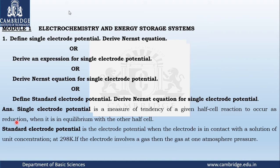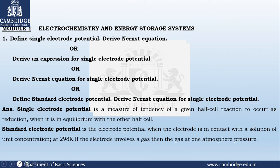Today the very first question I am going to discuss is one that is repeated several times: define single electrode potential and derive an expression for the single electrode potential. This question can also be asked as derive an expression for single electrode potential, or define standard electrode potential and derive the Nernst equation. This question is asked for either six or seven marks — most often six marks — with two marks for the definition and four marks for the derivation.